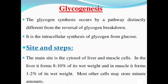Glycogenesis is the intracellular synthesis of glycogen from glucose. When glycogen is synthesized from glucose, the process is called glycogenesis. Glycogen synthesis proceeds by a pathway that is distinctly different from the reversal of glycogen breakdown — therefore, the pathways for glycogen breakdown and glycogen synthesis are separate. The main sites where glycogen synthesis takes place are the liver and muscle cells.